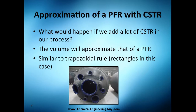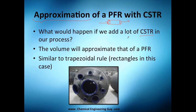Let me introduce you to this topic, which is kind of theoretical but cool — it's the approximation of a PFR, a plug flow reactor, with many CSTRs. What will happen if we add a lot of CSTRs with small volumes but a lot of them?